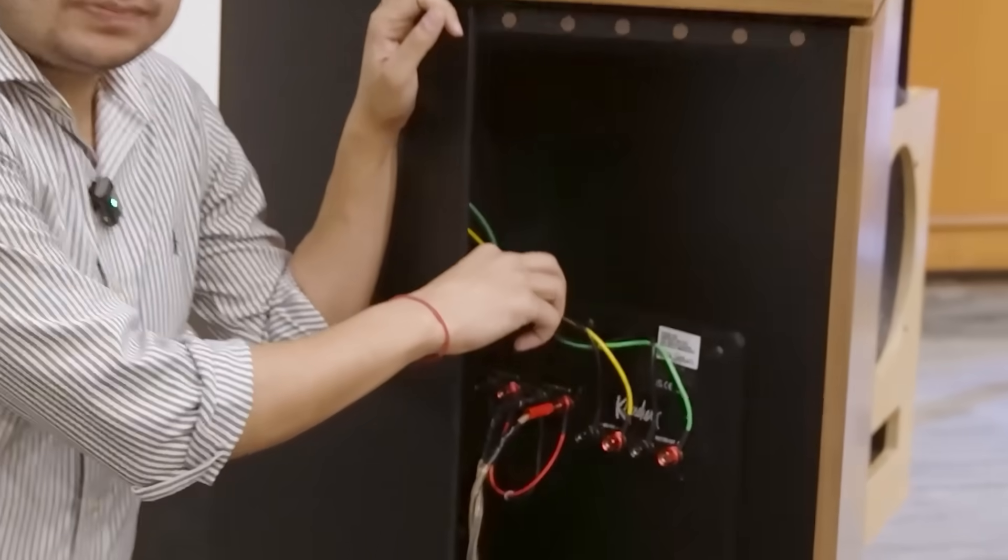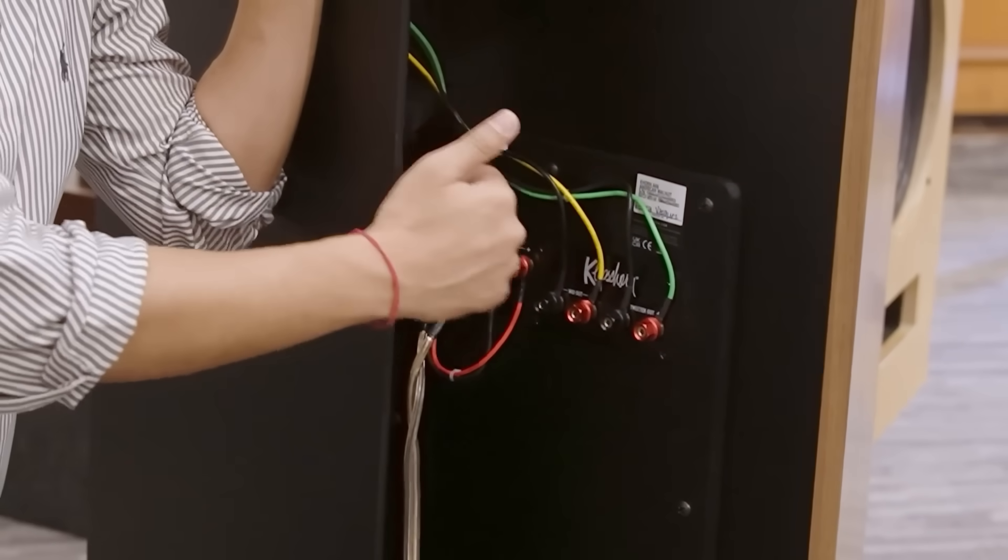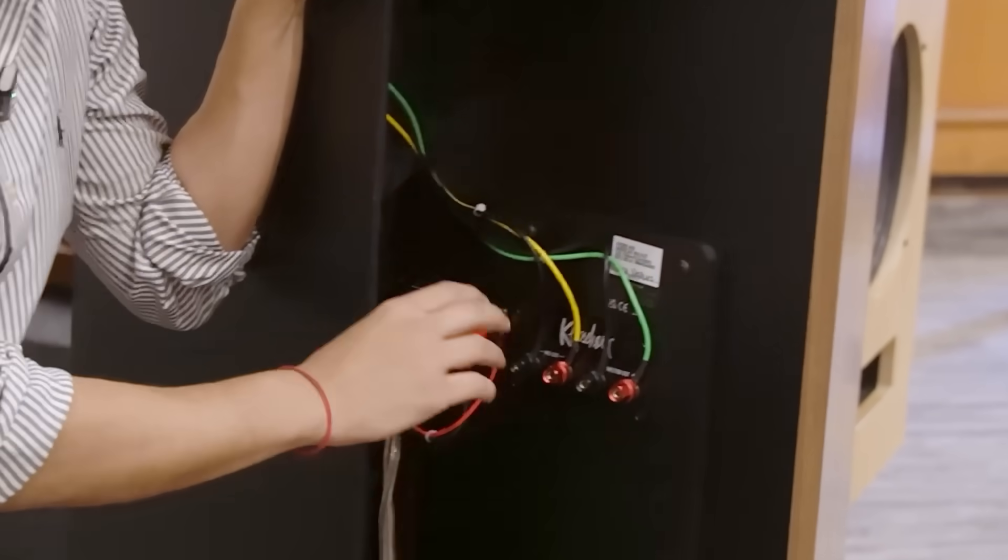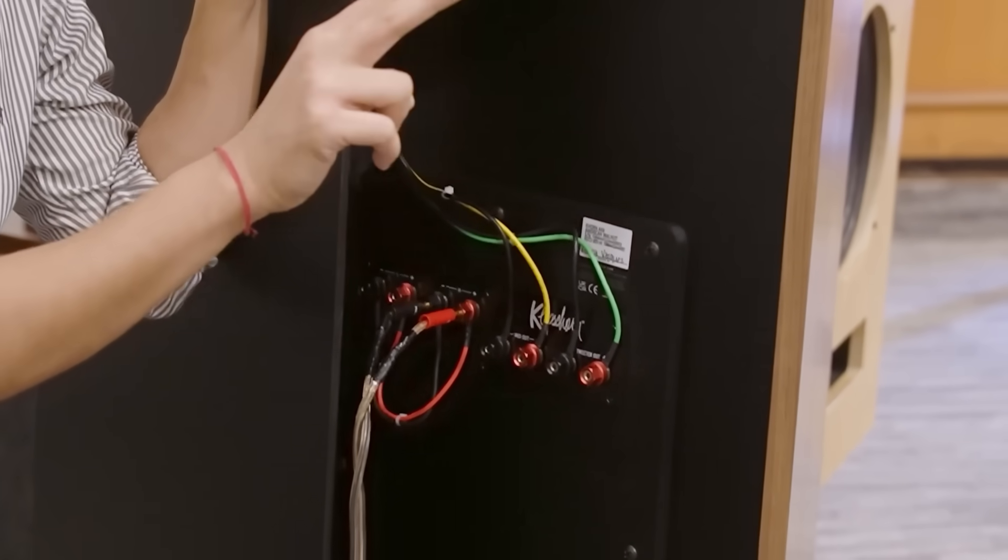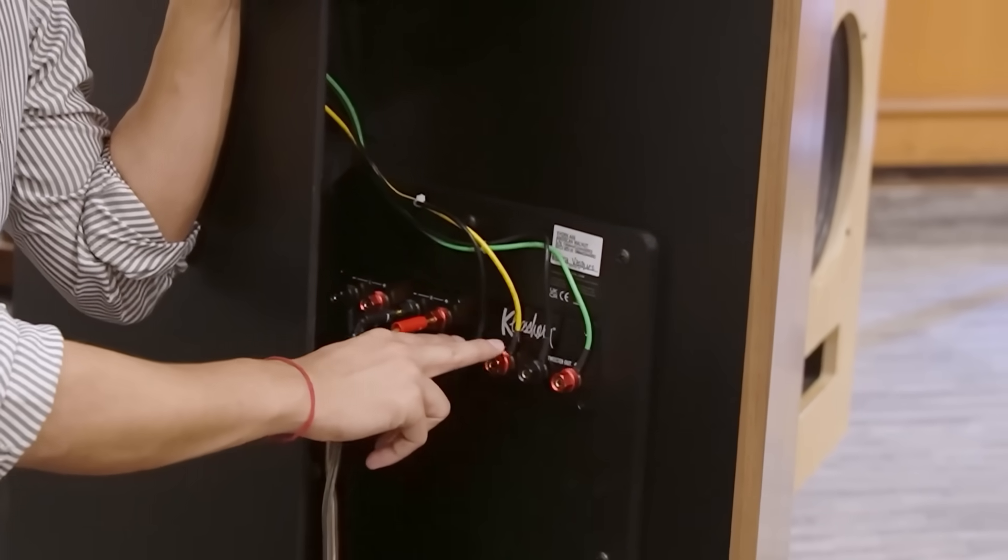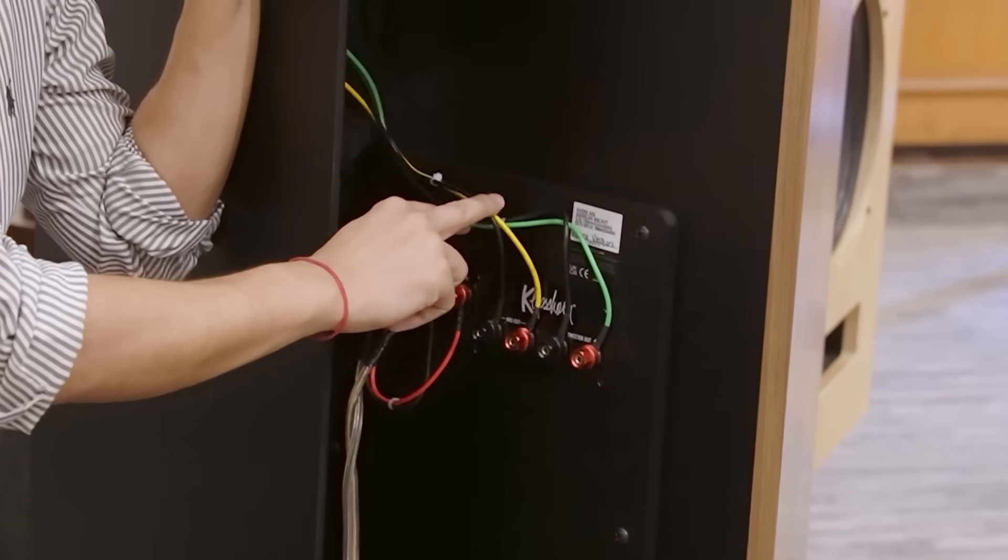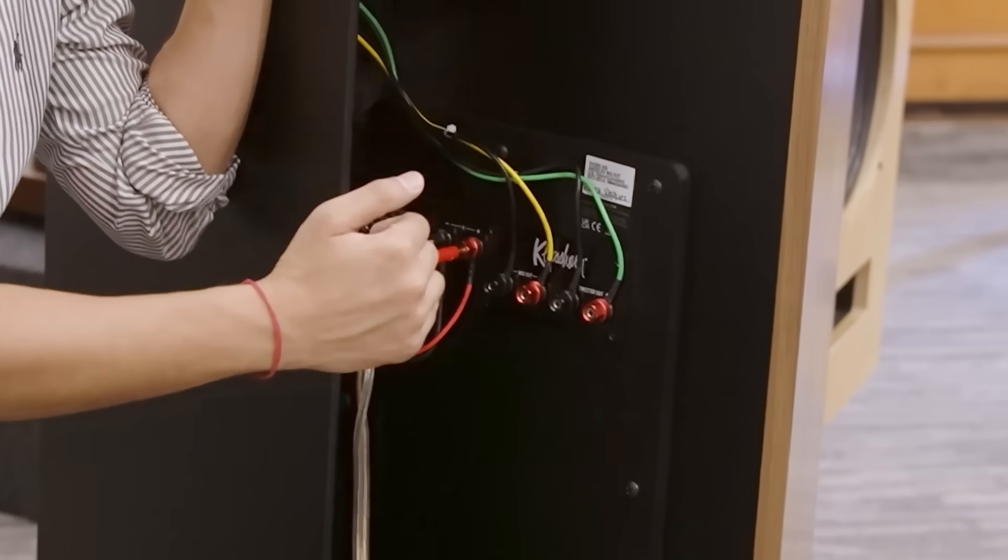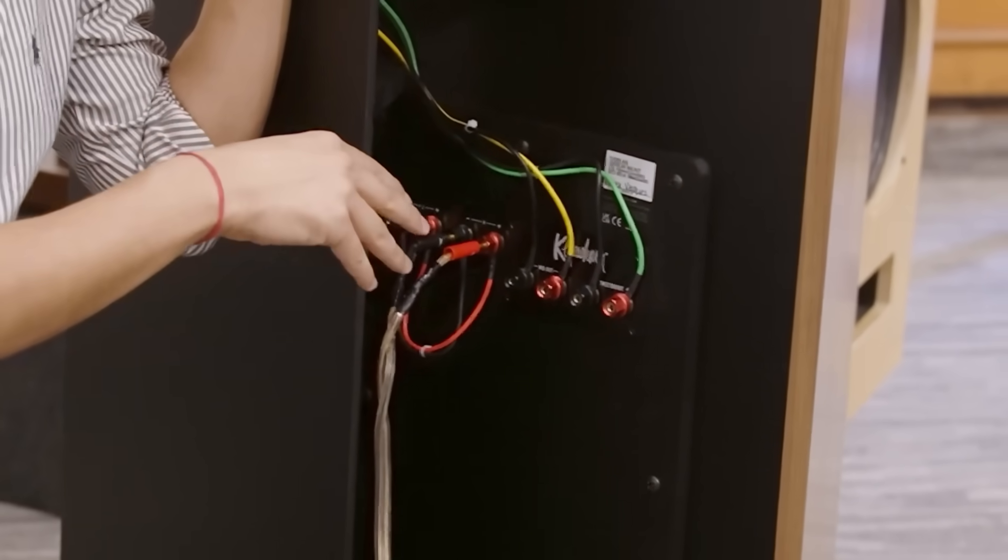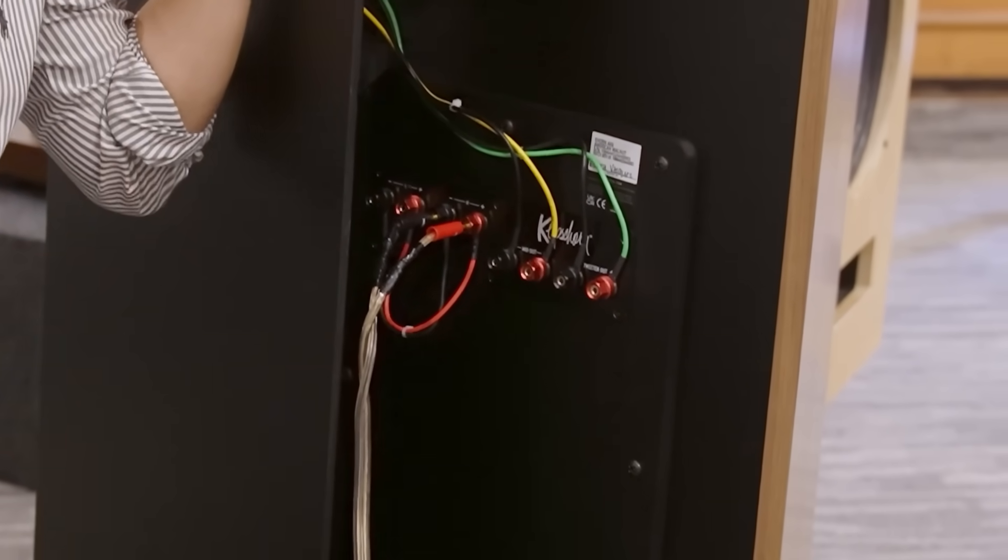It goes through the low pass filter inside which sends all the frequencies below 200 hertz to your woofer. Then the second signal for your tweeter and mid range come out over here and here you now see we have two separate connections, one going to the tweeter and one going to the mid range. So that's how all three drivers are separated even though the input signal is the entire frequency spectrum from 20 hertz to 20 kilohertz.